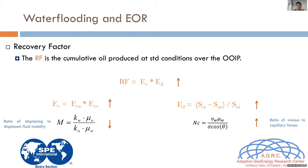Recovery factor has two components that are multiplied together, and we cannot overlook one while focusing on the other because they are interrelated. We cannot have a terrible volumetric sweeping efficiency and expect that a great displacement efficiency product will still be useful if it doesn't sweep the reservoir. Equally, a perfect sweeping efficiency without modifying displacement efficiency and reducing residual saturation wouldn't justify the costs of an EOR project.